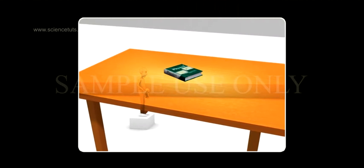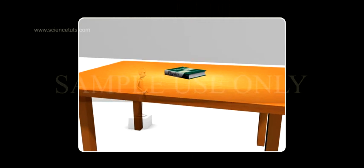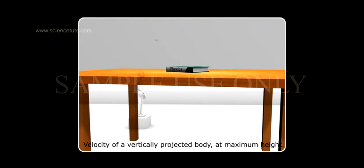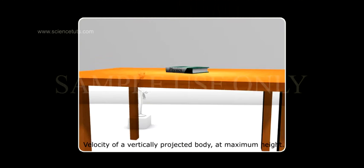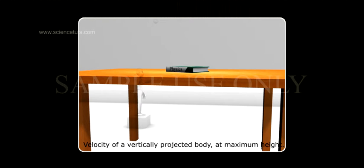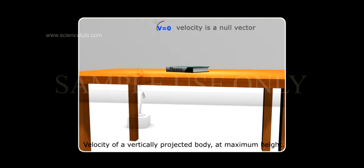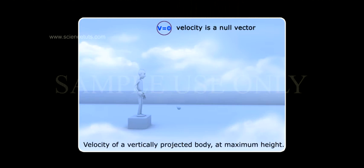Another example for NULL VECTOR: velocity of a vertically projected body at maximum height. From this illustration, we observe that the magnitude of velocity of the body is zero — V is equal to zero at maximum height. Therefore, velocity is a NULL VECTOR.